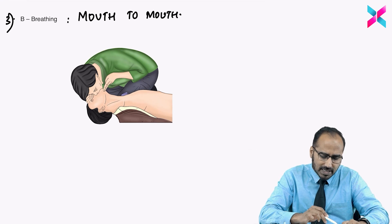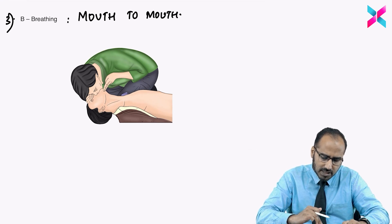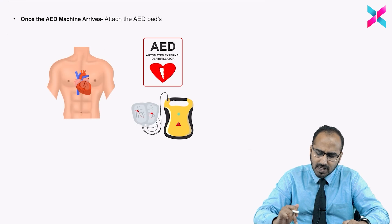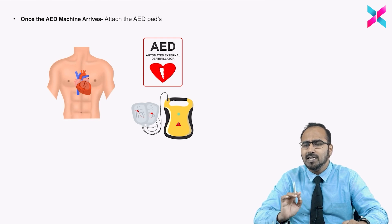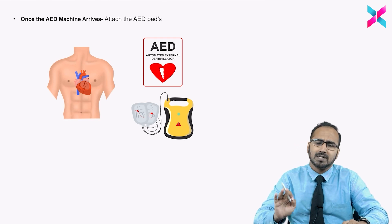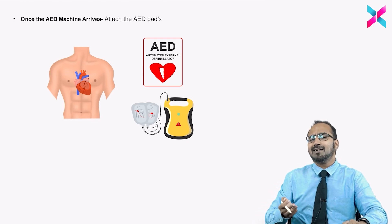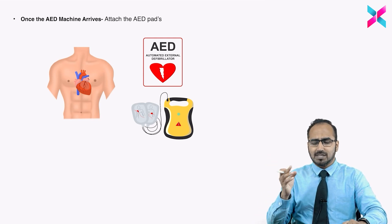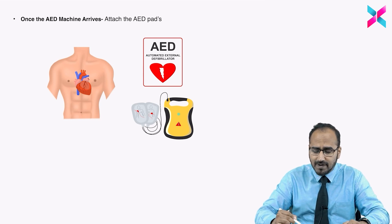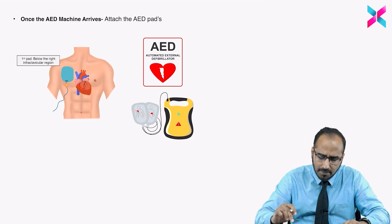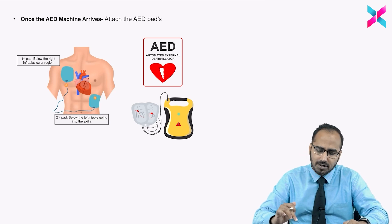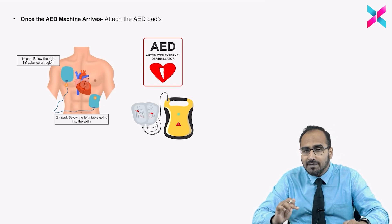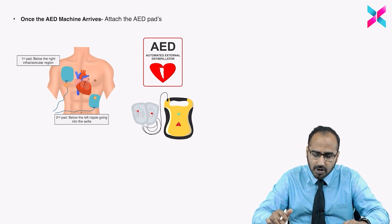Now imagine the person you called for help arrives with an AED machine — an Automated External Defibrillator. Remember, an AED can be used by any person; you don't need to be a doctor, because it is automated. You take two pads — it will be written where to apply them. One pad is applied at the upper right of the sternum, and the other at the lower side of the left chest.